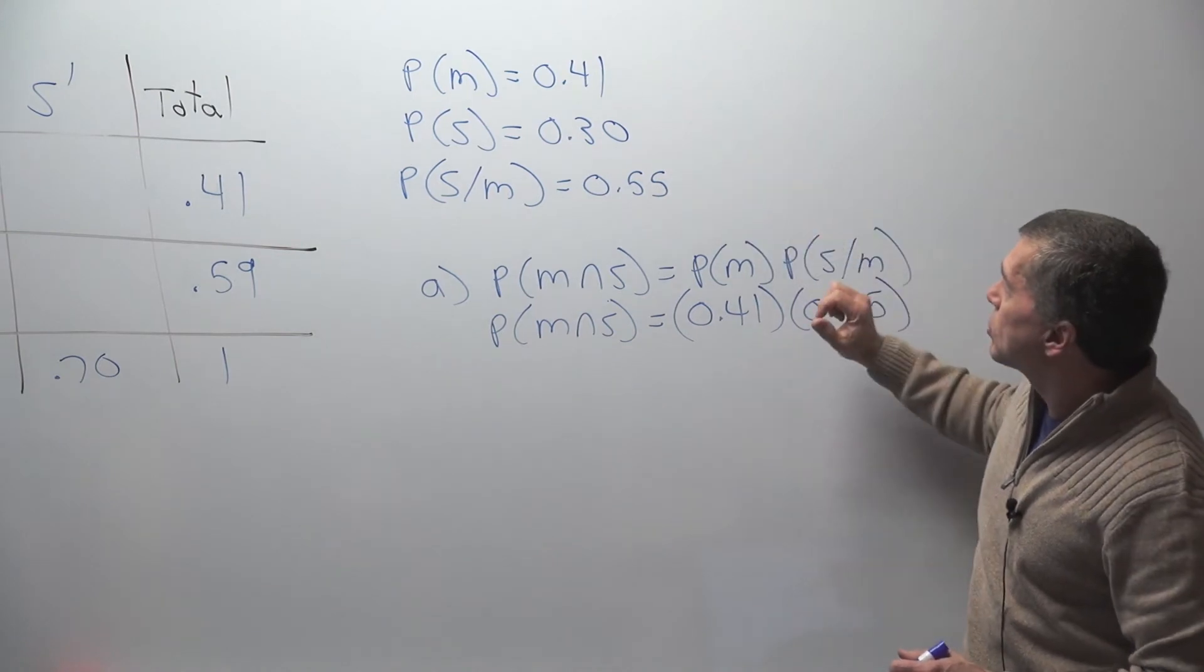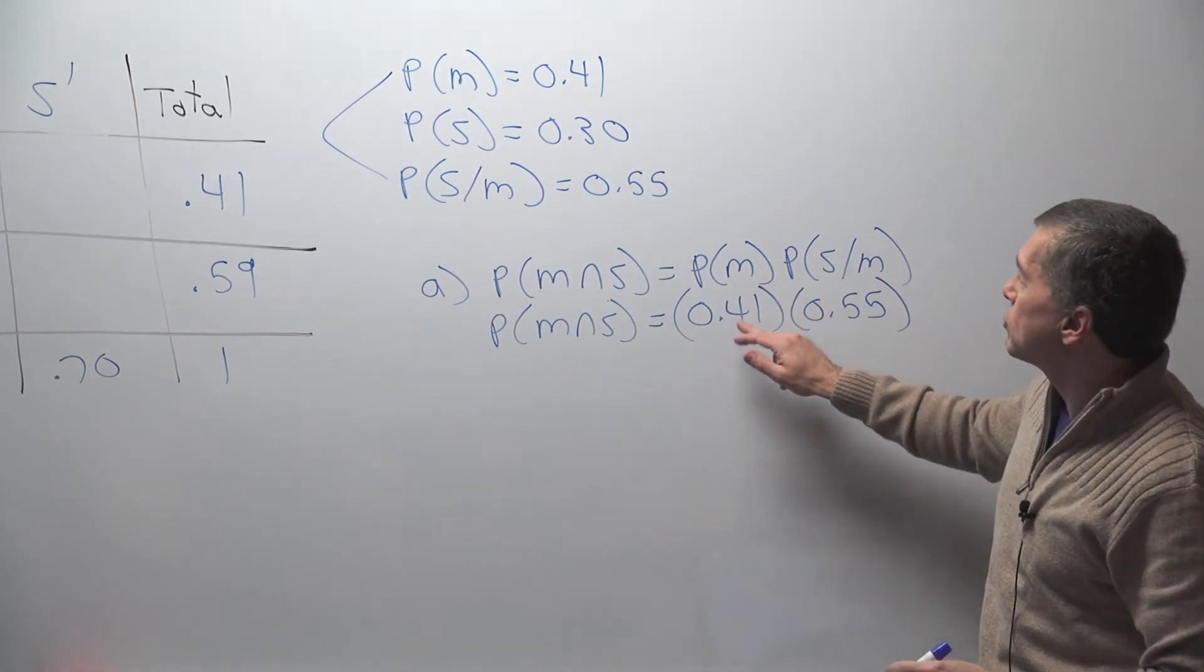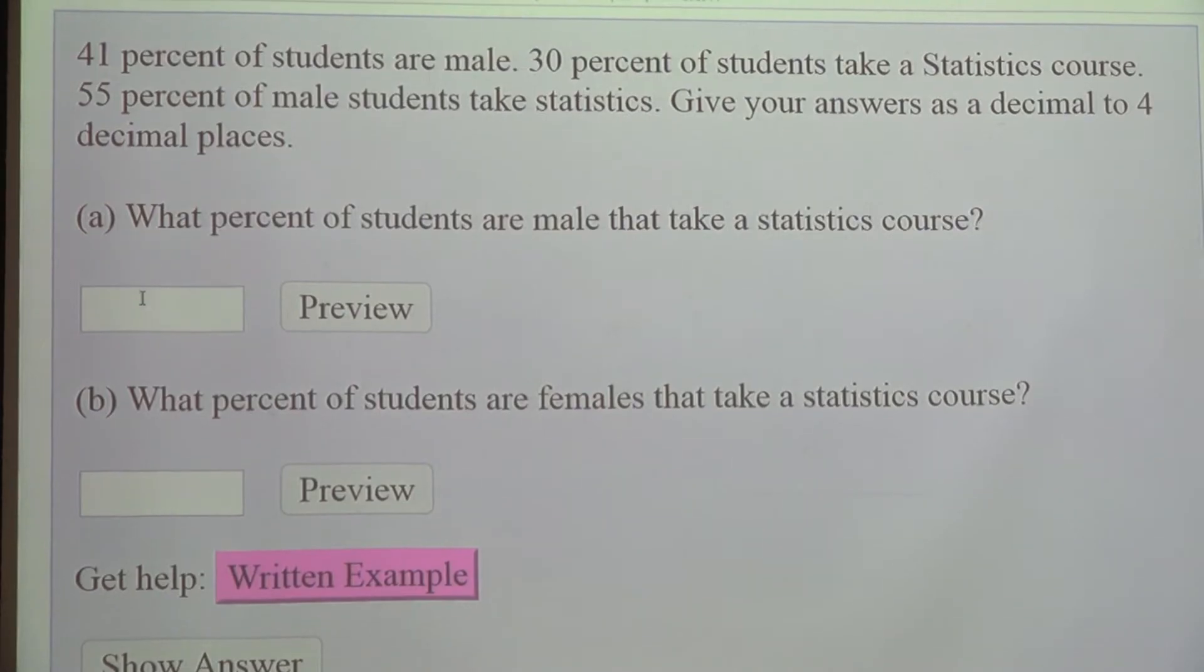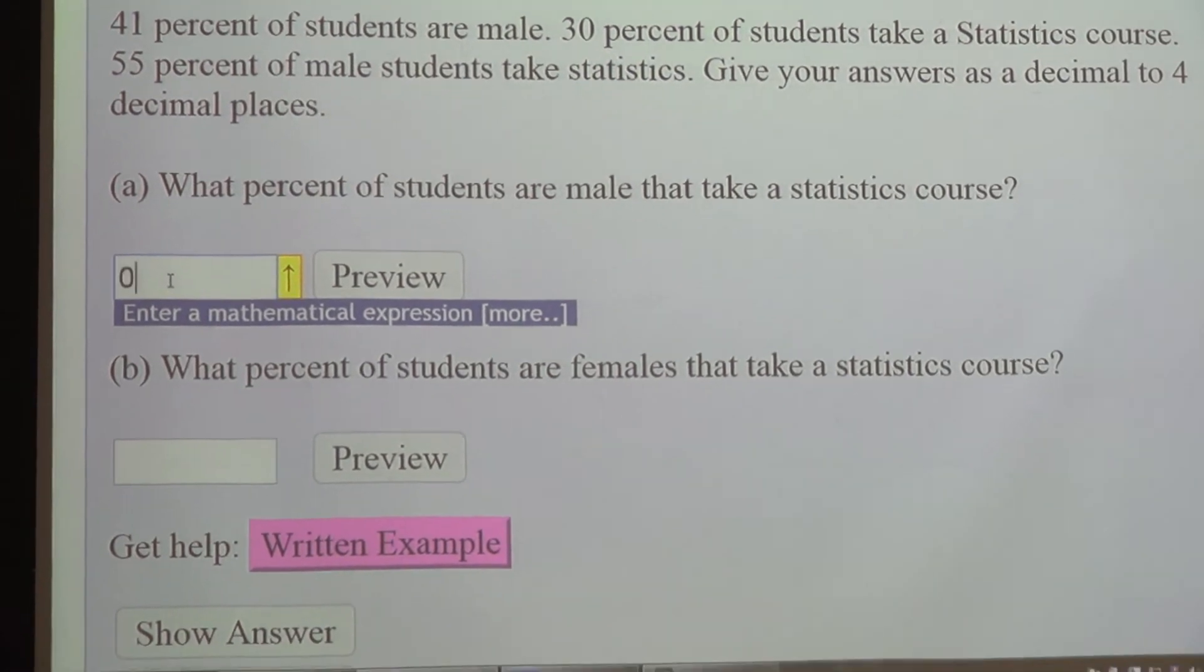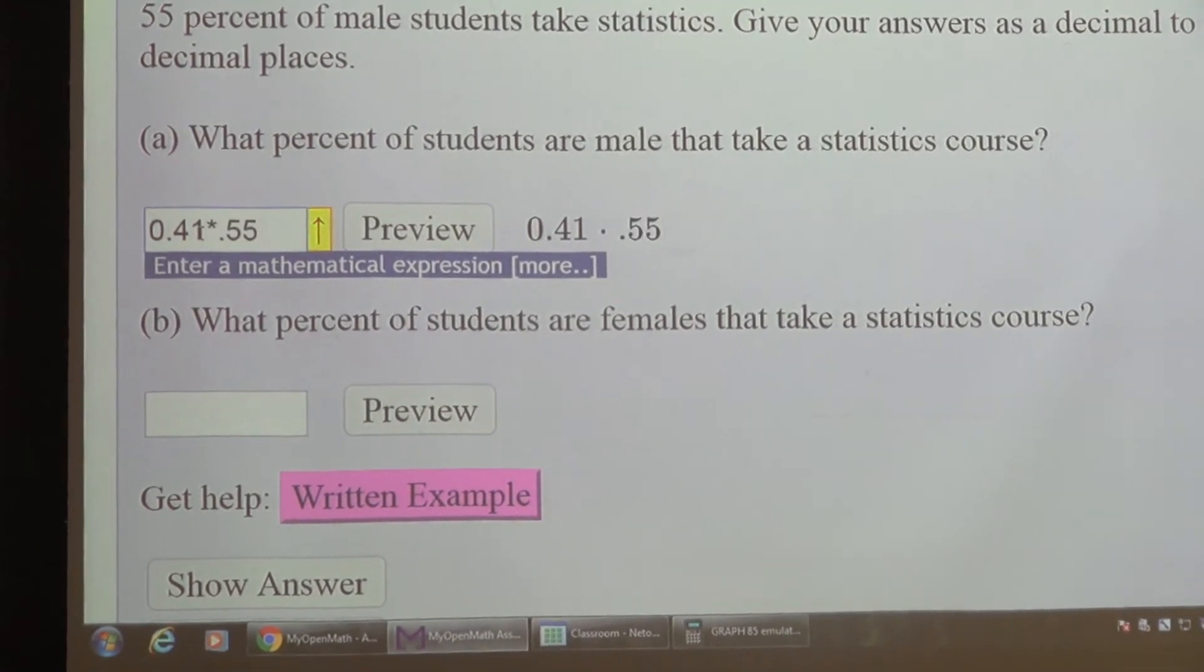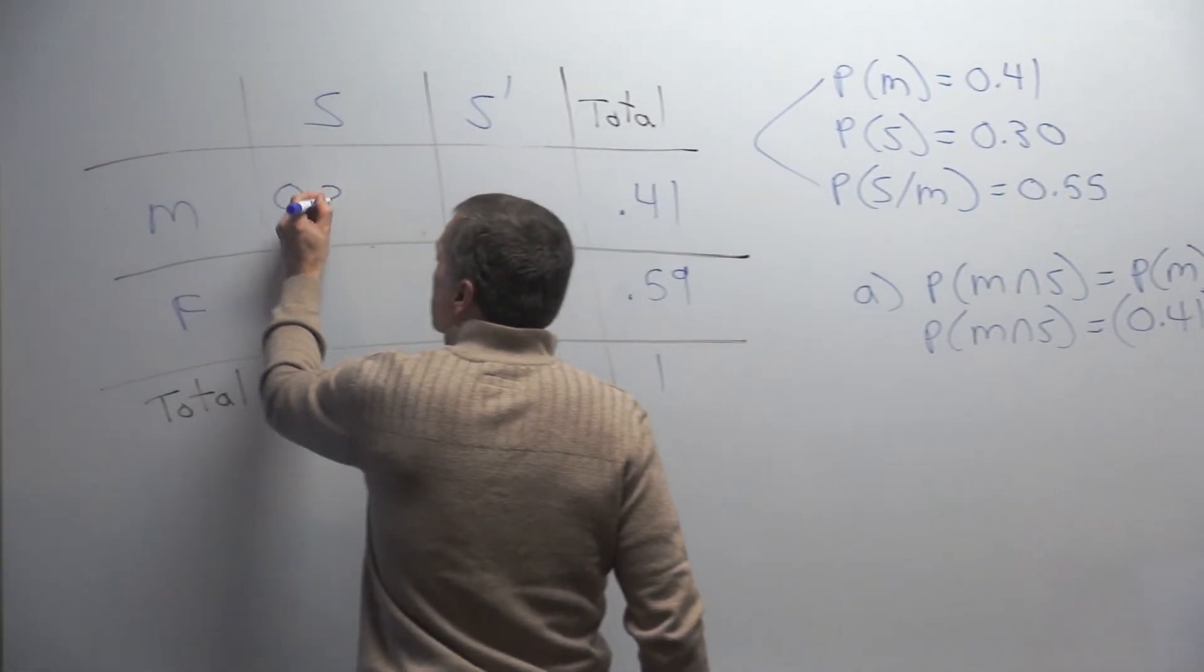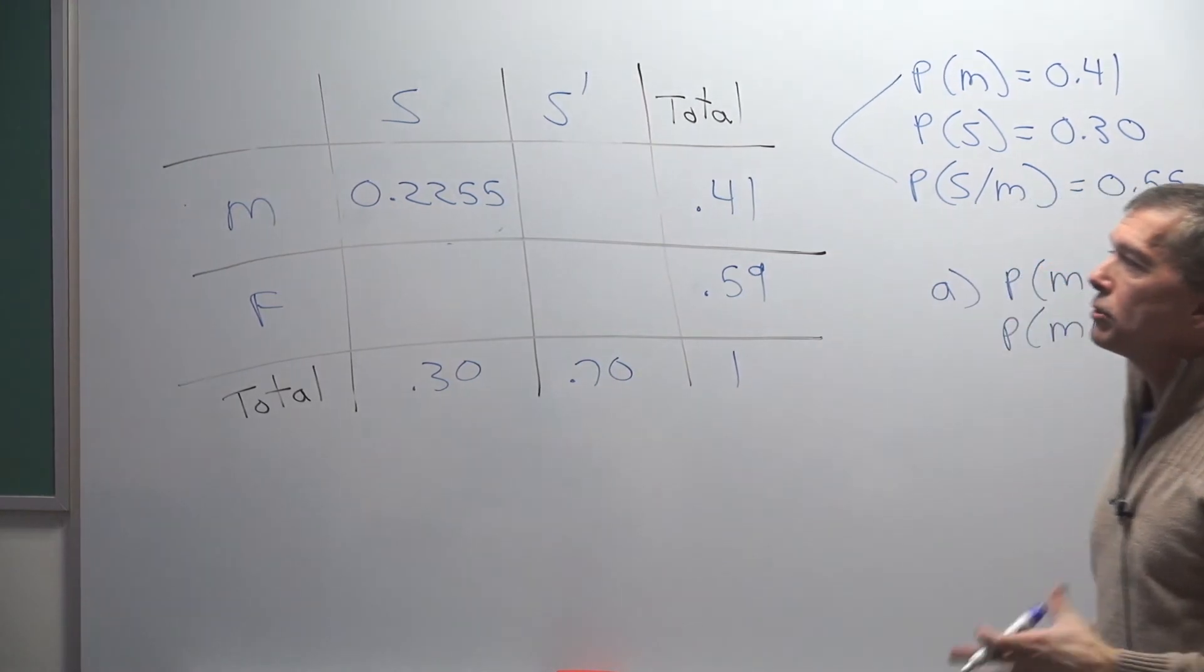But this is the information I have, so I just multiply these two together right here. So that's probability male is 41 percent, probability statistics given male is 55 percent. Multiply those two together and you get your answer. And again, you can type these. As long as you click in this cell and it says enter a mathematical expression, that means you can do your math in the cell. So this is 0.41 times 0.55 and I have that answer. And I'll go ahead and put that in this slot right here. This is male and statistics. So this value right here is 0.2255. Don't round it. You just end up making a mistake because you just rounded it.